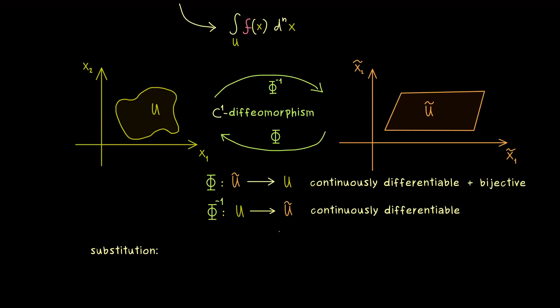Okay and now here what you should see is that we want to use this function Phi as a substitution in our integral. Which means instead of x we want to write Phi of x tilde. This is the whole idea. This is the change of variables we want to do.